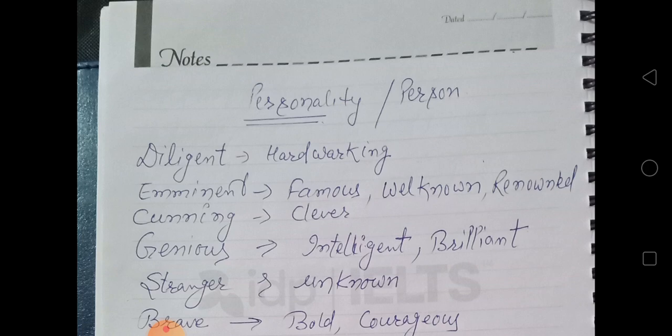Eminent means famous and well-known. Trump was an eminent personality, or we can say Donald Trump is an eminent personality, famous personality, well-known and renowned. The spelling of renowned has a mistake here; there should be a K that I skipped.